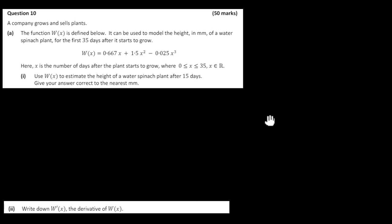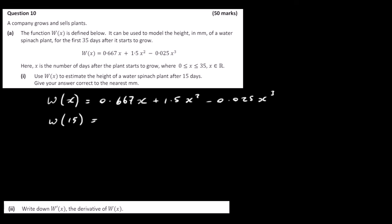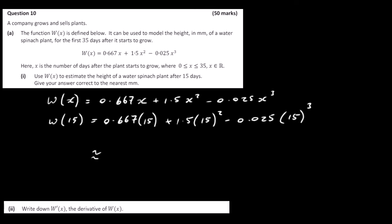Use W of X to estimate the height of a water spinach plant after 15 days, giving your answer correct to the nearest millimetre. So we need to find W of 15: that's 0.667 times 15 plus 1.5 times 15 squared minus 0.025 times 15 cubed. This is just calculator work — put it all into your calculator and round to the nearest millimetre. The answer is 263 millimetres.